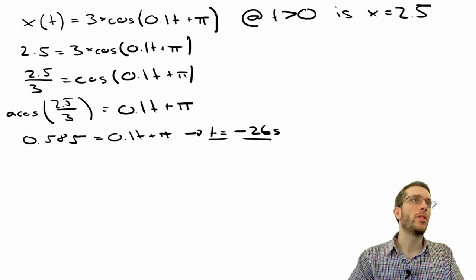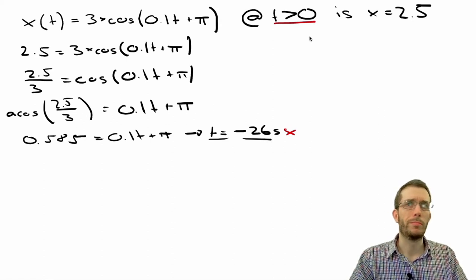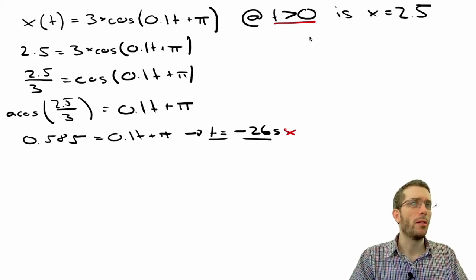Now you submit that to your teacher and your teacher goes, this is wrong because I want the t is bigger than 0. So what is going on here and how can we solve this?